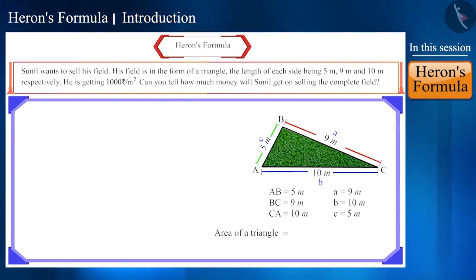Heron's formula for calculating the area of a triangle is square root S and within brackets S minus a, S minus b, S minus c and its solution will be as follows.